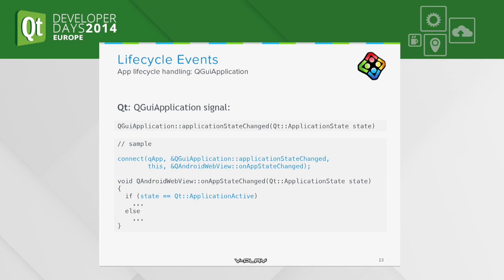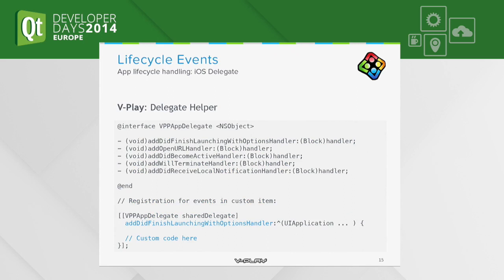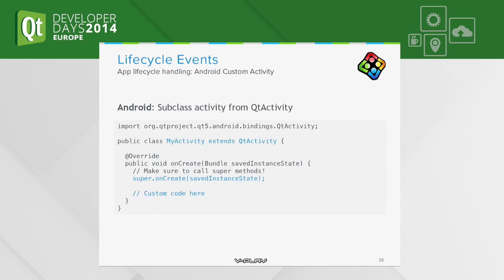If you need finer control over lifecycle events, you still have to go native. On iOS, all state handling is done in the application delegate object, which is already implemented by Qt. One approach is to replace the delegate and call your custom code there — but make sure you keep a reference to the old (Qt) delegate and call its functions too, otherwise you might break things in your app. On Android it is very similar: you can get the Qt activity from the Android bindings package, subclass the Qt activity, and add your custom code there. Again, make sure you call super on create as in the example, otherwise your app might not start up.